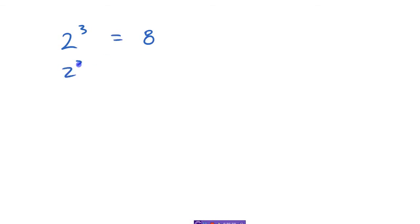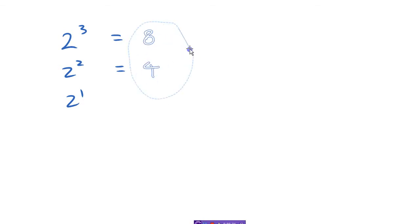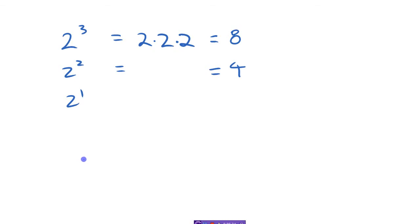When you first learn about powers: 2 to the 3rd equals 8. If we keep counting down by 1 on the exponent side — 2 to the 3rd, 2 to the 2nd, 2 to the 1st — and follow the pattern to find what each should equal: 2 to the 3rd is 8, 2 to the 2nd is 4. In expanded form, there are three 2s for the 3rd, two 2s for the 2nd, and one 2 for the 1st.